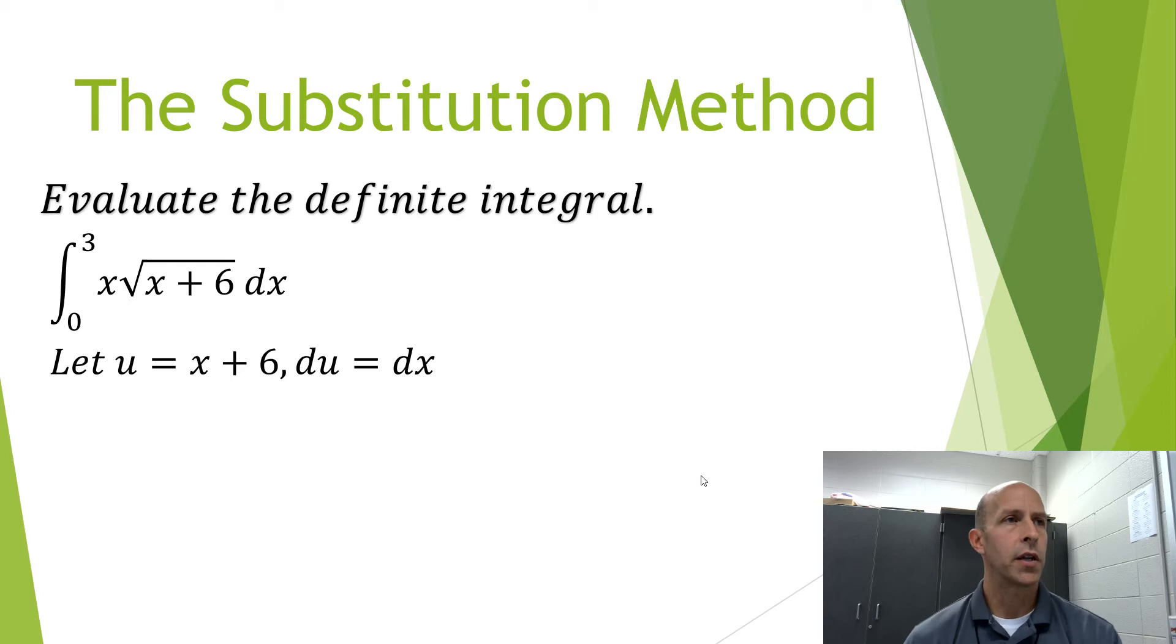If you look at the quantity under the square root, we can let that equal u, and then the derivative du would be dx. It should be noted that u equals x plus 6 can be rewritten as x equals u minus 6, and therefore I can substitute these three expressions into our original integral.